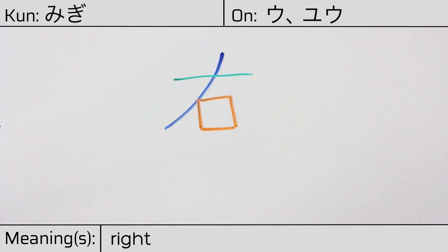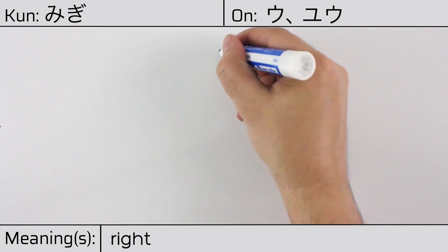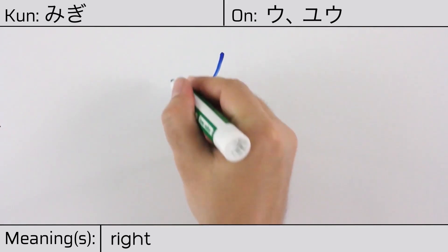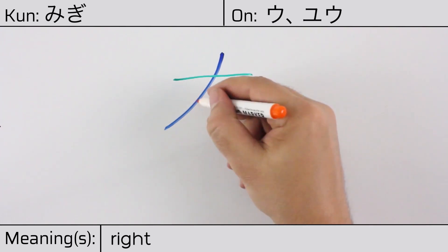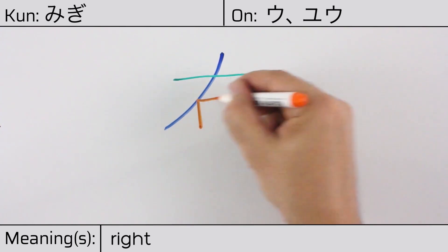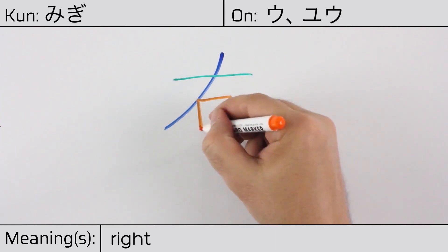You can remember this kanji by the following hint: the hand that brings food to the mouth, where the part on the left represents the hand.